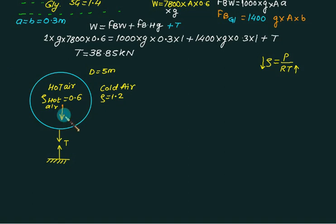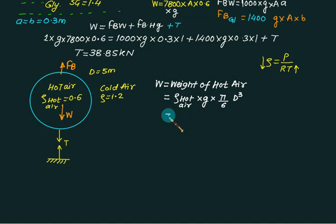Hot air weight will act vertically downward. Cold air buoyant force will act vertically upward. First of all, W is equal to weight of hot air, equal to density of hot air multiplied by g, multiplied by volume, which is π by 6 d cubed. So you can put this value as 0.6 multiplied by 9.81 multiplied by π by 6. Diameter is 5 meters cubed.